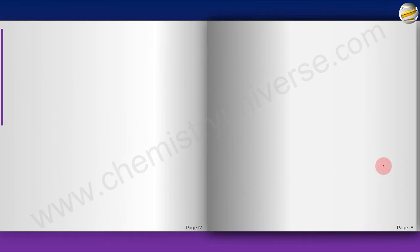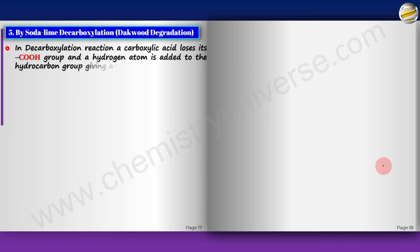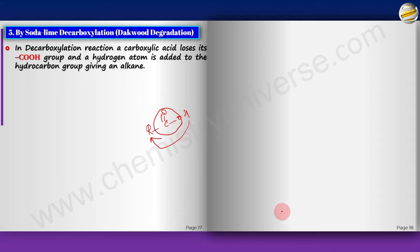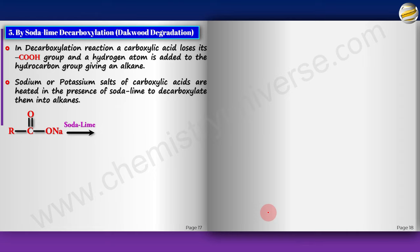Next is soda lime decarboxylation, also known as the Duma process or Duma degradation. A carboxylic acid loses its –COOH group; a hydrogen atom is added to the hydrocarbon group, giving an alkane (RH, not R–R). Sodium or potassium salts of carboxylic acids are heated with soda lime (NaOH + CaO mixture) to decarboxylate them: RCOONa + NaOH → RH + Na₂CO₃.